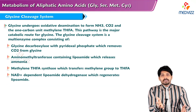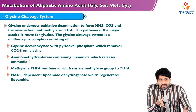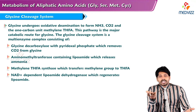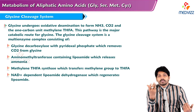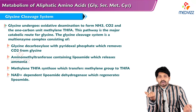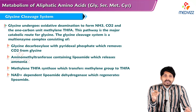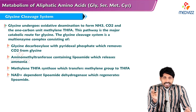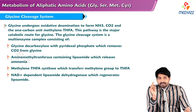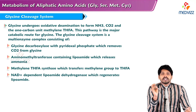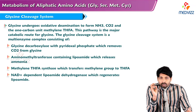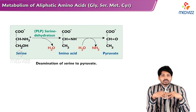This overall picture describes the glycine cleavage system, where glycine undergoes oxidative deamination to form ammonia, carbon dioxide, and a one-carbon unit — methylene tetrahydrofolate. This pathway is the major catabolic route for glycine. The glycine cleavage system is a multi-enzyme complex consisting of glycine decarboxylase, aminomethyl transferase, methylene tetrahydrofolate synthase, and NAD-dependent lipoamide dehydrogenase.